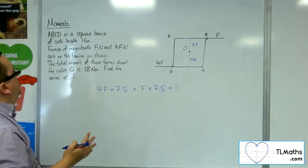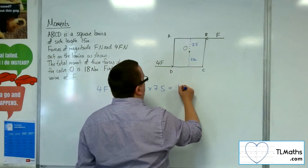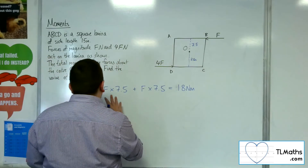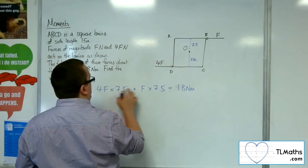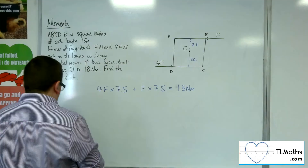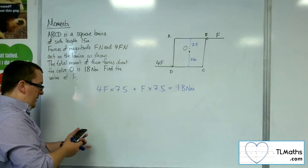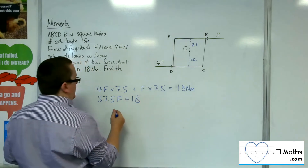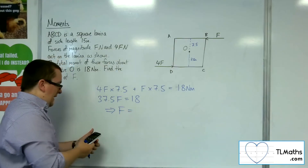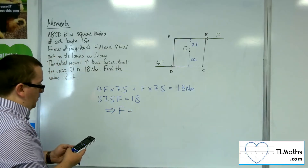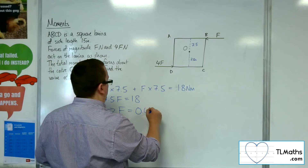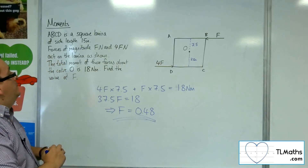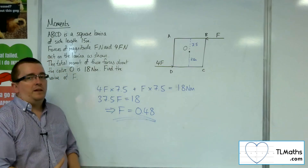And that has got to be equal to a total of 18 newton metres. So, 4 lots of 7.5 plus 1 lot of 7.5 is 5 lots of 7.5. Five lots of 7.5 is 37.5. So F is equal to 18 divided by 37.5, which is 0.48. So F has to be 0.48 in order for that to be the case.